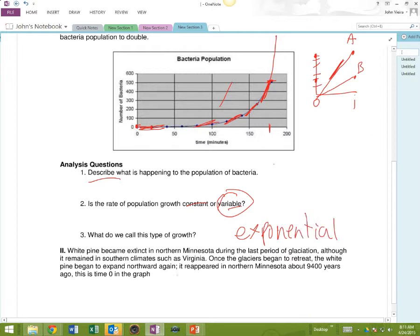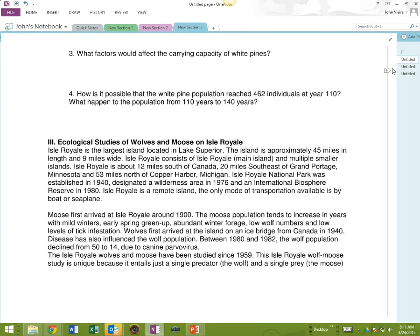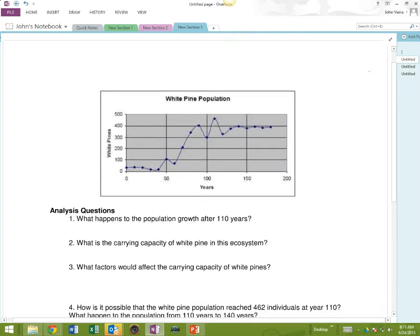Okay. Now we're going to talk about pines or trees growing in Minnesota after a glacier goes away. Look at what happens here. Look at the slope of this line and it increases, growth here increases, and then eventually we balance off. Now, what do we call it when the population reaches its kind of maximum level in an ecosystem?